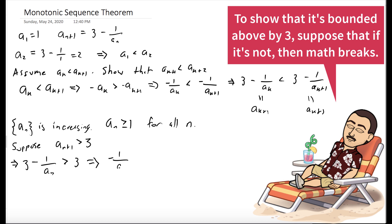Subtracting 3 from both sides means that negative 1 over a_n is greater than 0, which implies that a_n is negative. But we showed that a_n has to be greater than or equal to 1. So this is a contradiction.